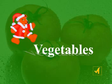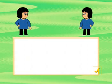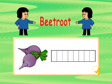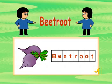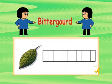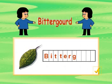Vegetables. Beetroot. B, E, E, T, R, O, O, T. Beetroot. Bitter Gourd. B, I, T, T, E, R, G, O, U, R, D. Bitter Gourd.